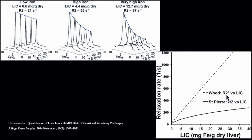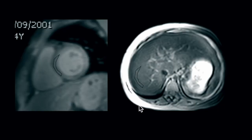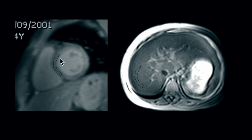R2 star represents the relaxation rate — it is simply 1 divided by T2 star. To perform the calculation, you must draw an ROI in the myocardial and liver slices. In the myocardium, the mid-septum is preferable as it is less susceptible to motion. The ROI should include as much myocardial tissue as possible, avoiding the cavity and blood-myocardial interfaces. For the liver, the ROI should be within the liver parenchyma, away from the margins, vessels, and biliary tree. When you propagate this ROI through slices, you obtain signal intensity values for each TE.